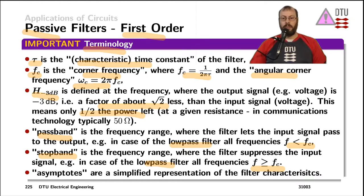For engineering estimations, the asymptotes of the filter transfer function are often used to make a simple representation of the filter characteristic and to estimate how that filter behaves.